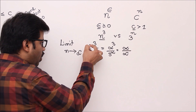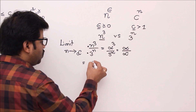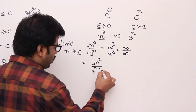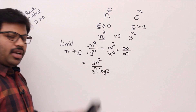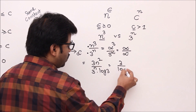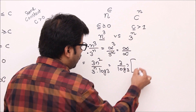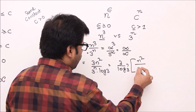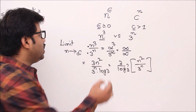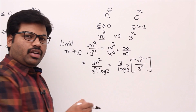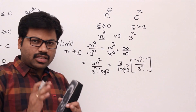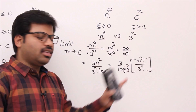Applying L'Hôpital's rule: the derivative of n³ is 3n², and the derivative of 3^n is 3^n · ln 3. Setting aside the constants, the remaining expression is n² / 3^n. Applying n = ∞ again gives ∞/∞, and we observe the numerator reduced from n³ to n² while the denominator remains the same.